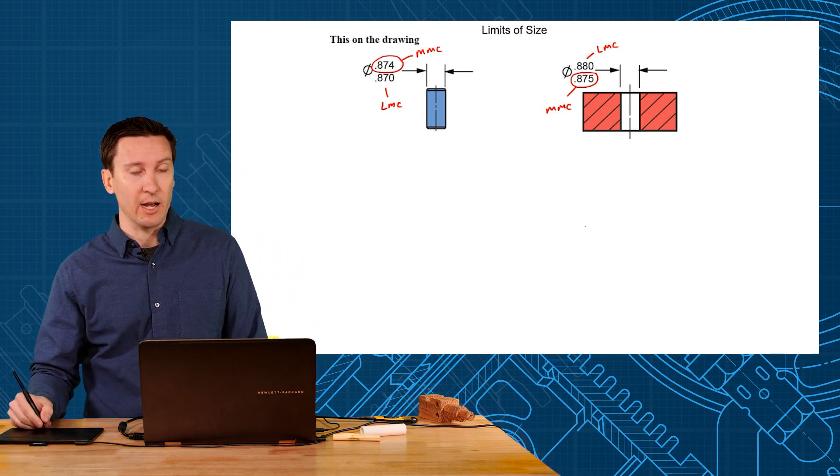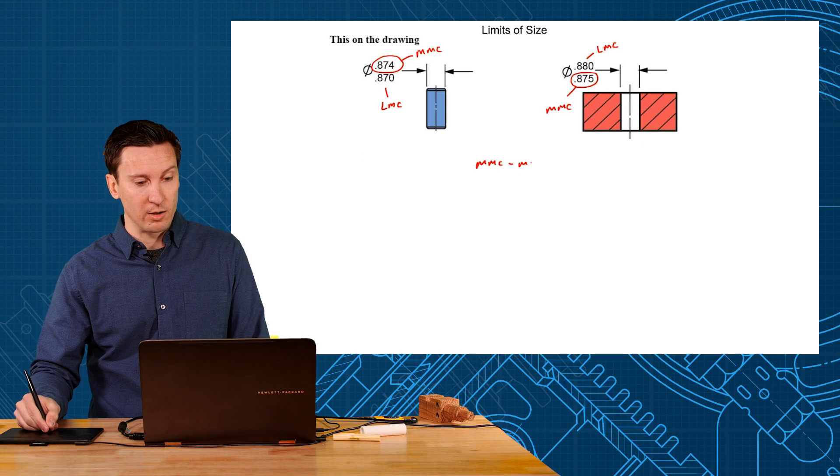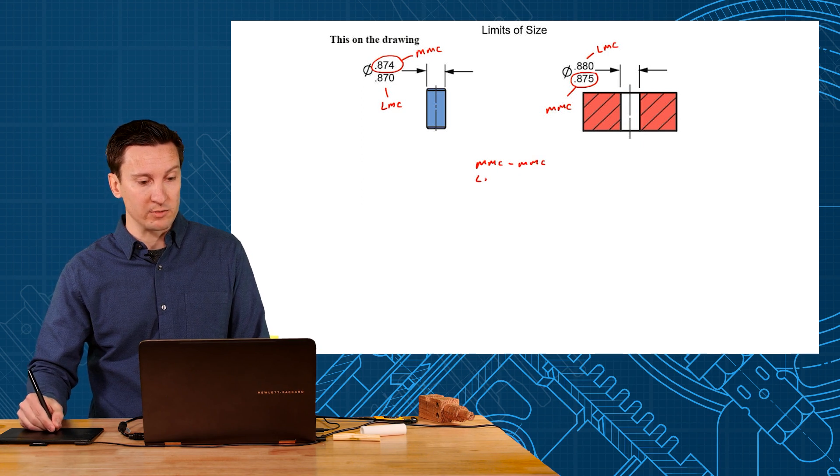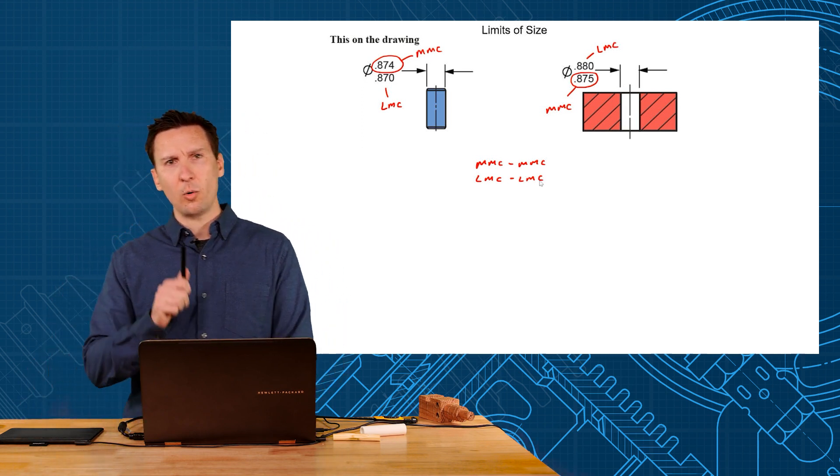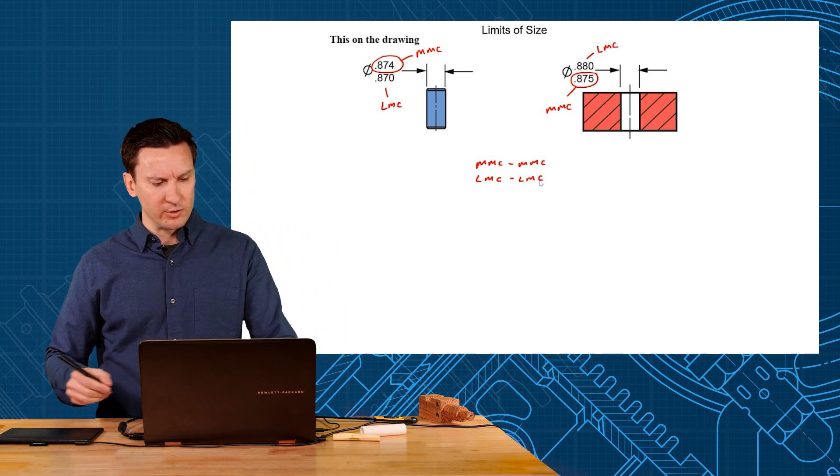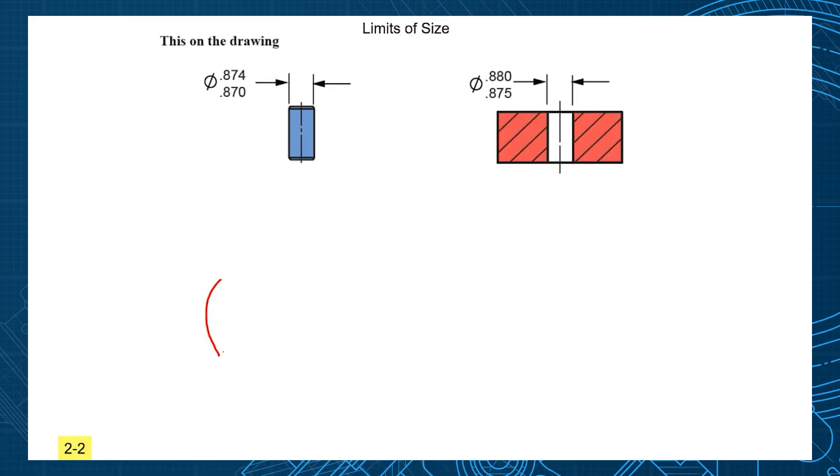We talk about the performance of the fit, and the performance of fits are always based on those two worst case conditions. Now we have one other problem: what happens at our worst case if this pin comes out shaped like a macaroni? Will that pin fit into that hole?